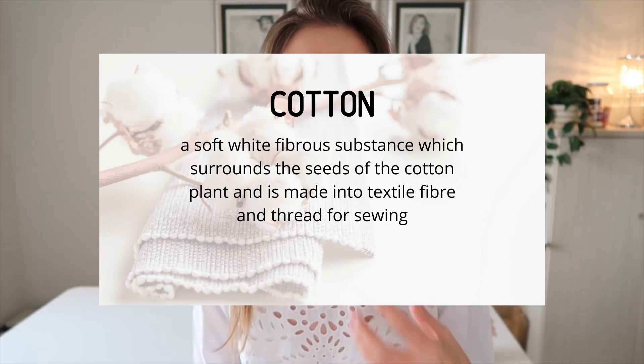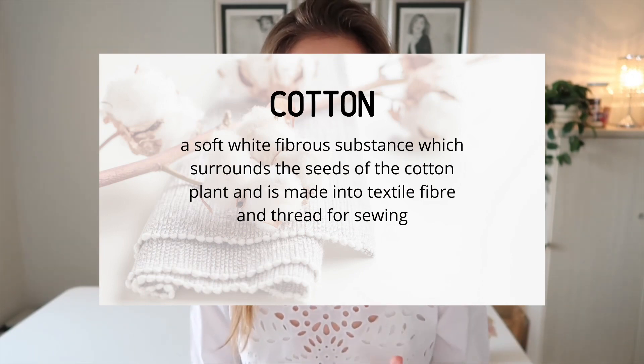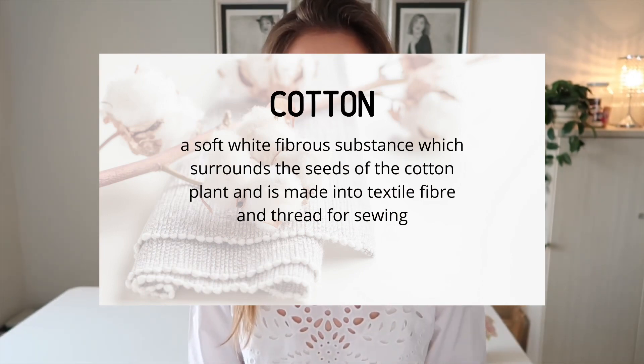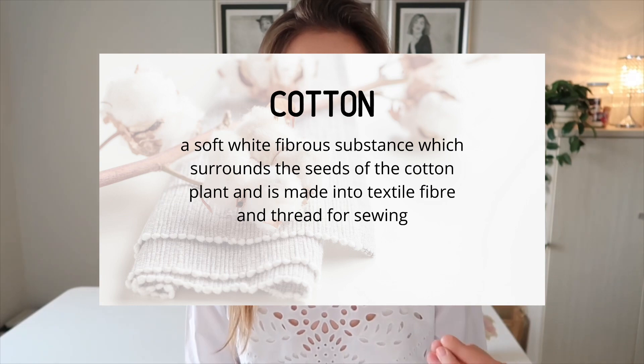Cotton comes from the cotton plant. It is almost 7,000 years old, which means it's one of the oldest fibers or fabrics that we know, and that we've been making clothes and other items out of. Growing cotton and getting it from the plant all the way through to it being a fabric that we can wear every single day is quite a process, so let me quickly take you through it.